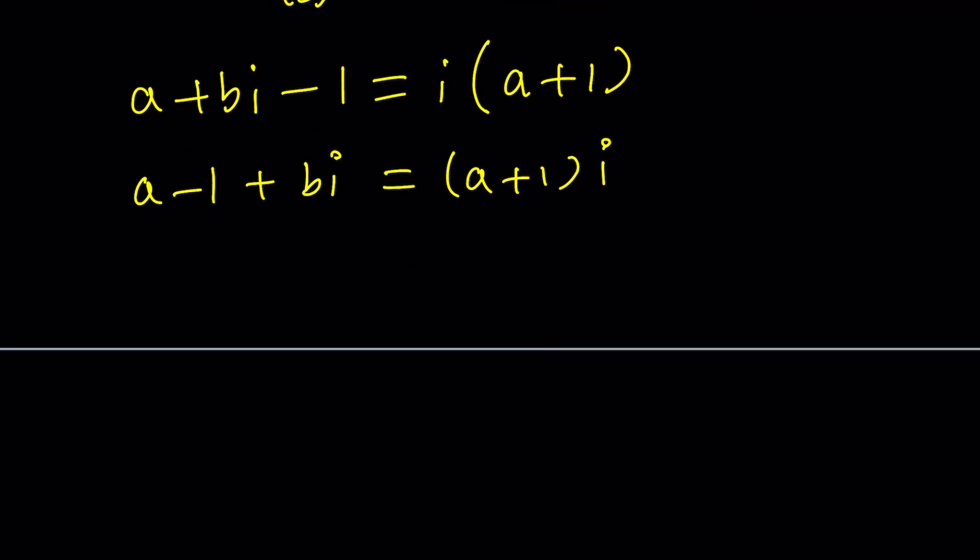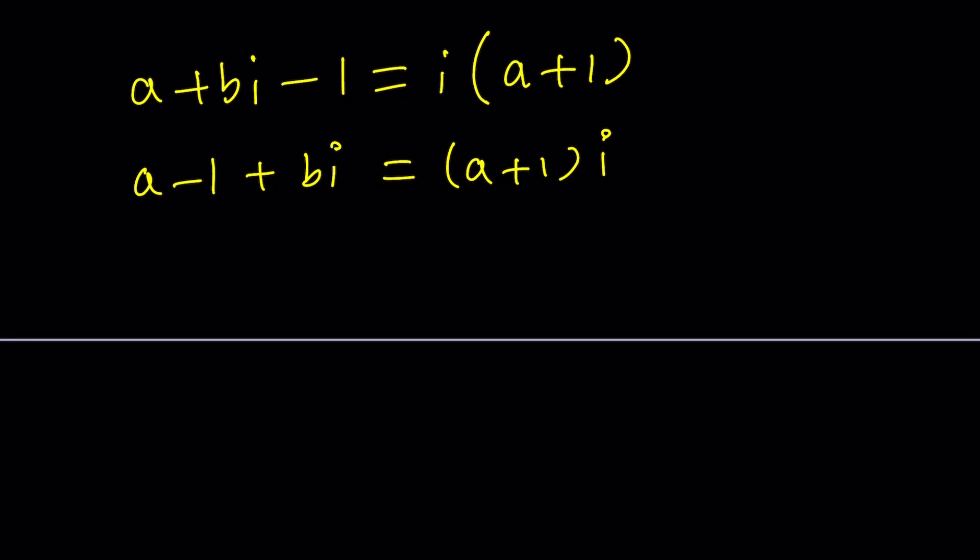We have two complex numbers that are equal and what do we know about their equality? That means the real parts are equal. So the real part on the left hand side is A minus 1, but there is no real part on the right hand side, which means the real part on the right hand side is 0. So A minus 1 should equal 0. And the imaginary part on the left hand side is B, and on the right hand side it's A plus 1. That means B is equal to A plus 1.